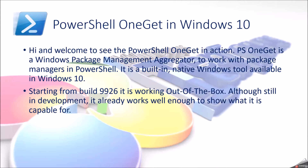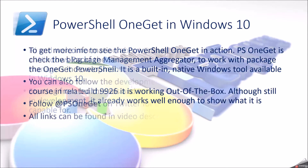Hi and welcome to see PowerShell OneGet in action. PowerShell OneGet is a Windows package management aggregator to work with package managers in PowerShell. It is a built-in native Windows tool available in Windows 10, starting from build 9926, working out of the box. Although still in development, it already works well enough to show you what it is capable of.